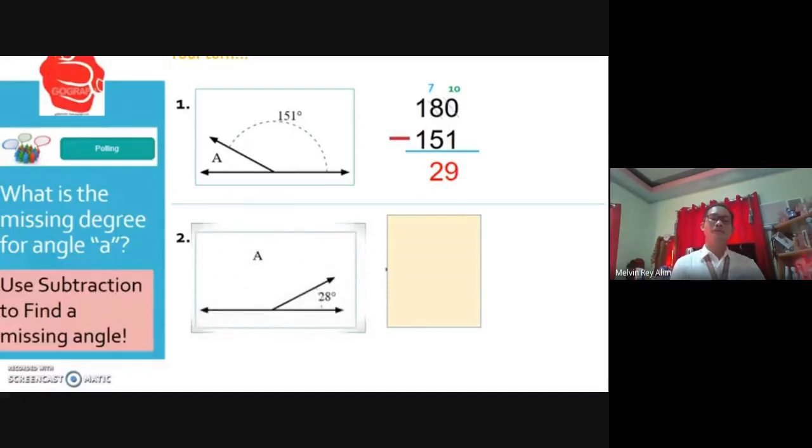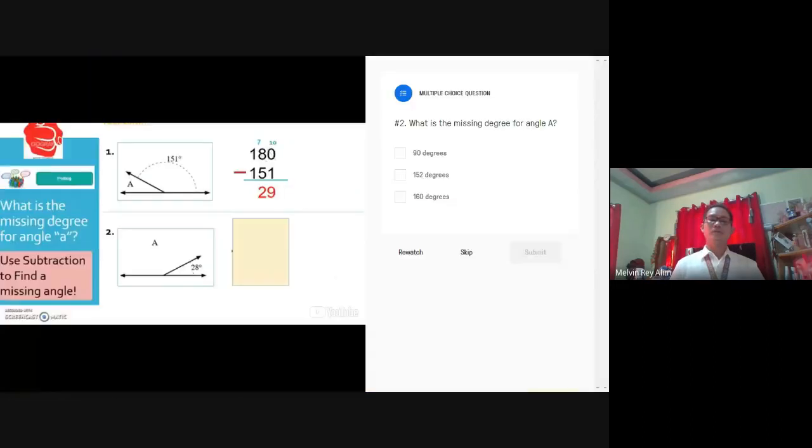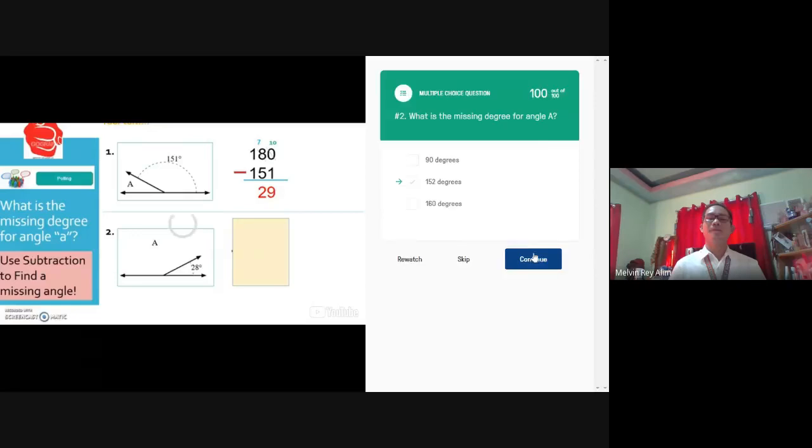Take your eyes down to number two with me, please. Take a look at this angle. You're given 28 degrees. What's the missing degree for angle A? Go ahead and figure this one out. Okay, next question. What is the missing degree for an angle A? Traces, 90 degrees, 152 degrees, 160 degrees. Answer.